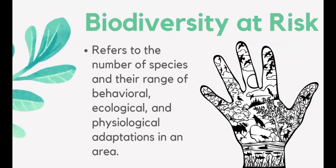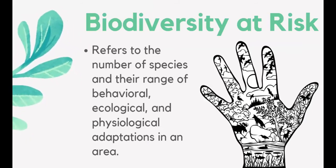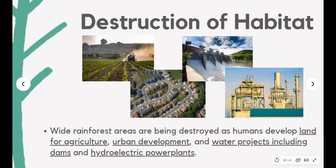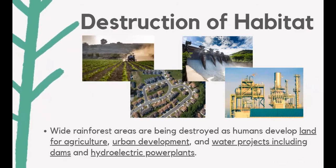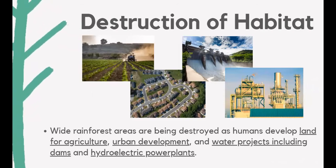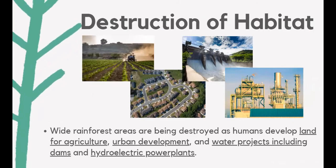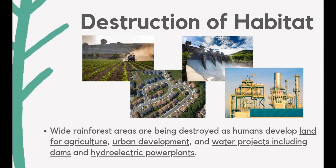Biodiversity refers to the number of species and their range of behavioral, ecological, and physiological adaptations in an area. Wide rainforest areas are being destroyed as humans develop land for agriculture, urban development, and water projects like dams and hydroelectric power plants. As a result, animal habitat is lost and animals eventually become extinct. Extinction refers to the disappearance of an animal species or population due to several factors.